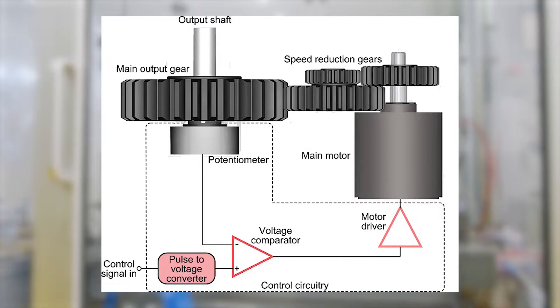The comparator then generates a third signal which will drive the DC motor. This third signal will be generated as long as there is a difference between the input signal and the signal from the potentiometer.